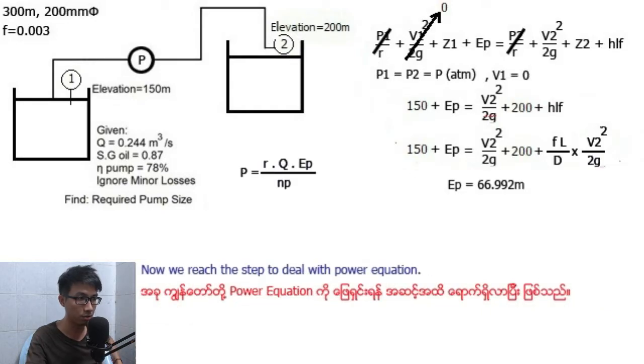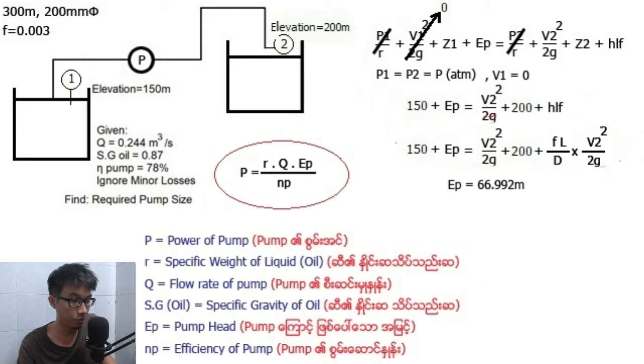Now we start to develop the power equation. P equals power of pump, gamma equals specific weight of liquid, Q equals flow rate of pump, S equals specific gravity of liquid, Ep equals pump head, and eta equals efficiency of pump.